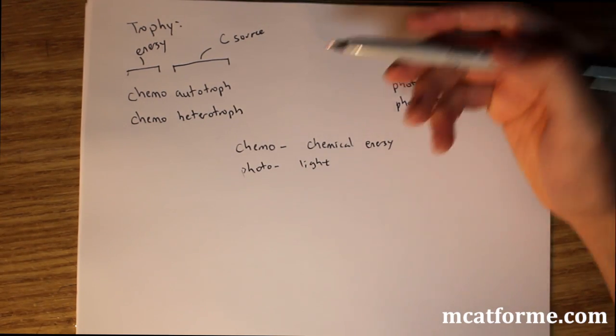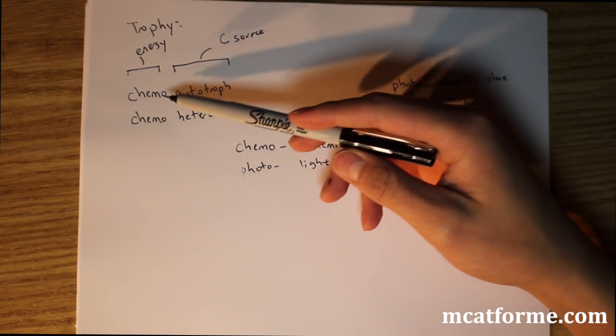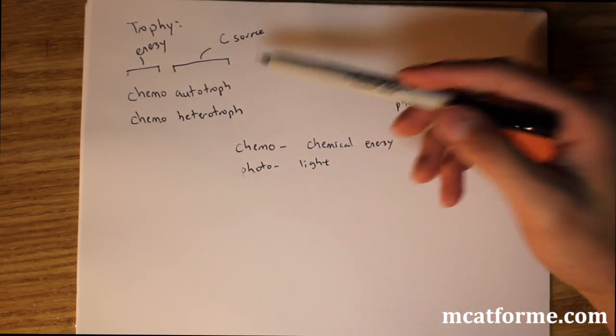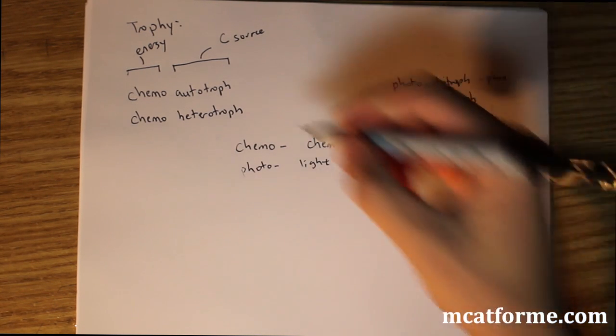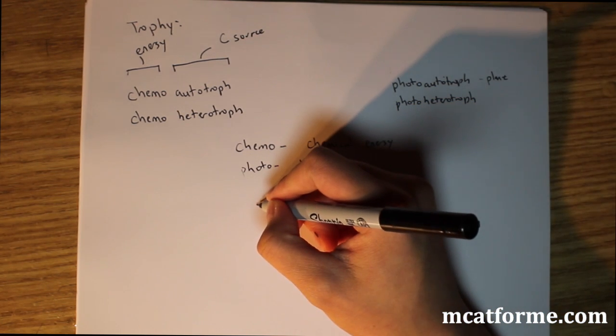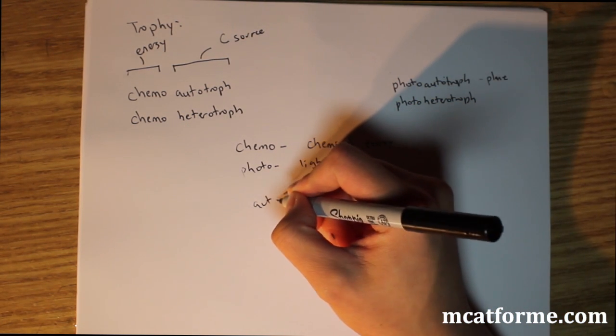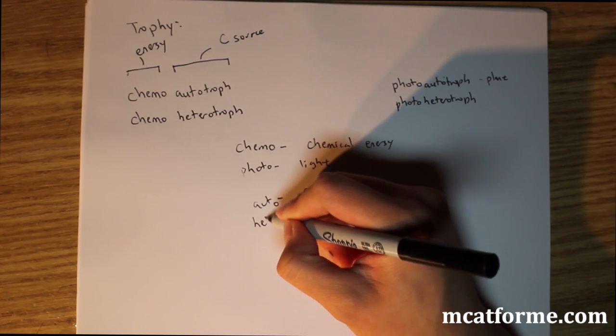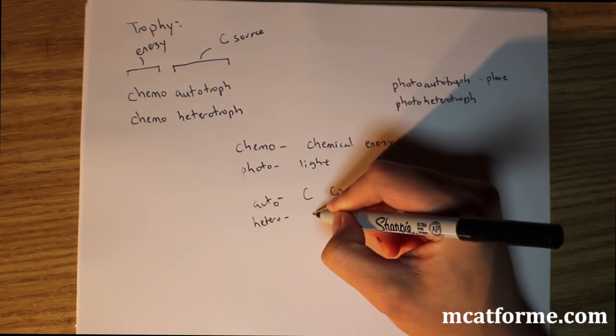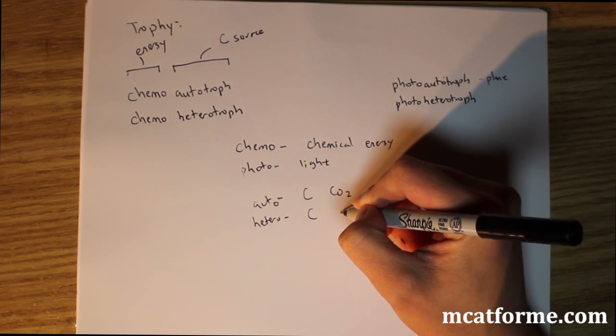Chemoautotroph, what would that be? That would get energy from chemical means, but it will also produce its own carbon or it will acquire its own carbon from CO2. So autotroph gets its carbon from CO2. Heterotroph means that it has to acquire its carbon from eating something, so carbon eating.